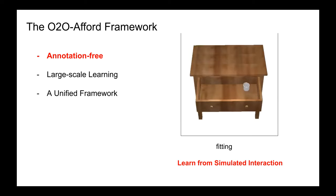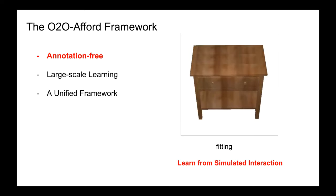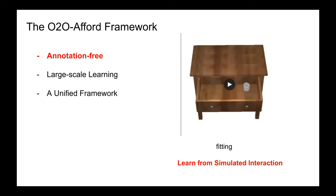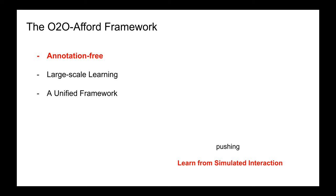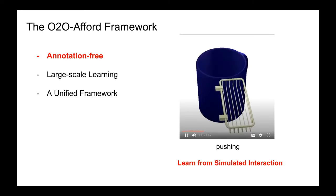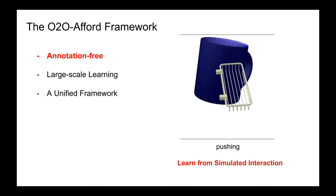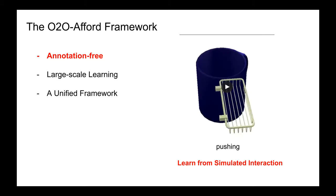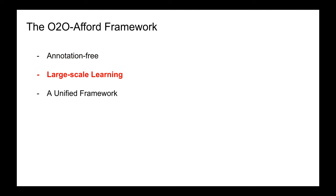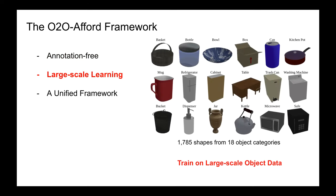For example, this video presents a fitting interaction trial where we first place an object inside the drawer and then drive the drawer to close, querying whether the bucket can be placed at this location. In this pushing example, we simulate the interaction of a rack pushing a mug — a failed interaction since the mug topples. Secondly, we conduct large-scale affordance learning, training our system over 1,785 shapes from 18 object categories to make our learned model generalizable to novel shapes.